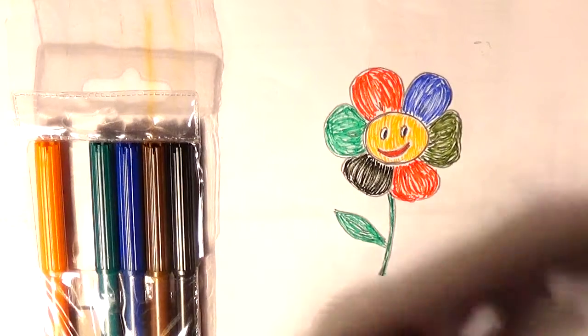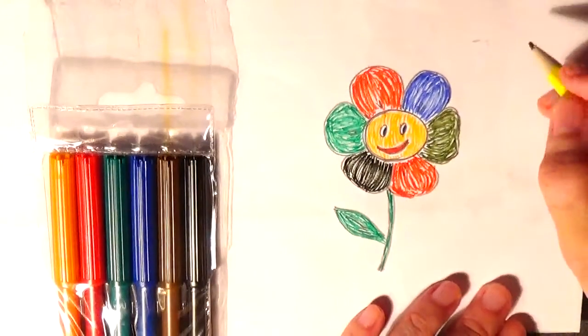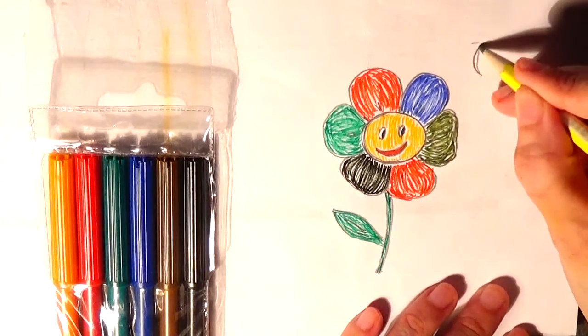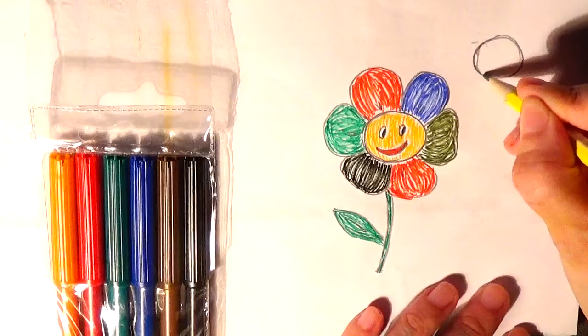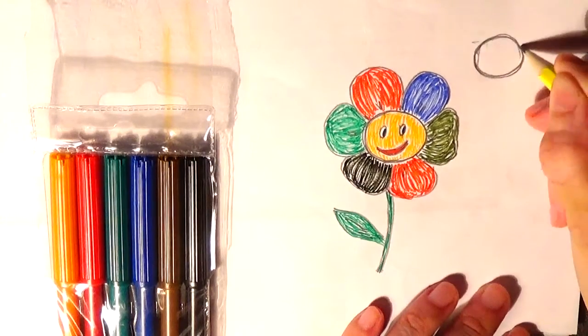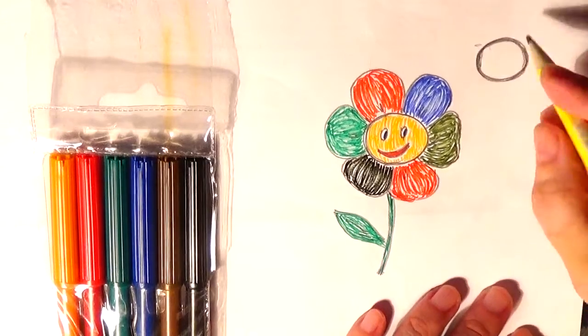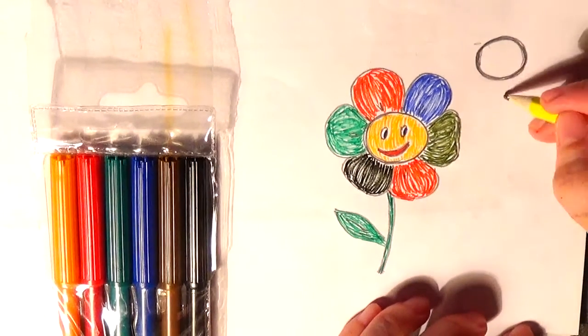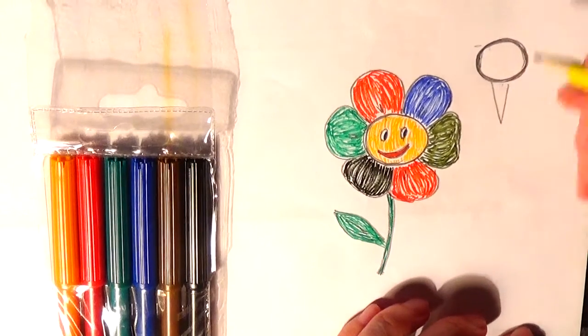Like this. Now I shall add here, I hope you can see this, a little circle like this and some triangles here.